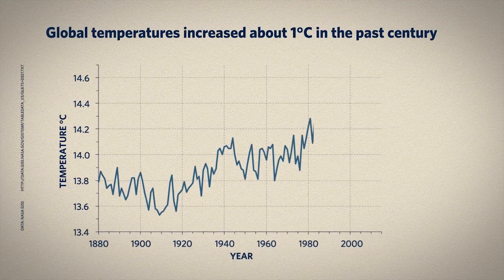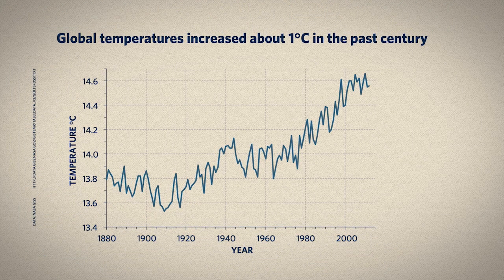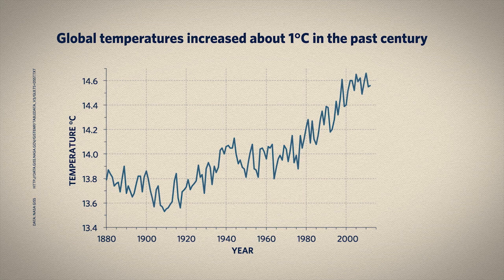Here's the data for global average surface temperatures since 1880. You can see that there's variability from year to year that's normal and expected. For example, 1998 was an unusually warm average year, because there was a large El Niño event, and during El Niños, large parts of the tropical Pacific Ocean are warmer than usual, so the global average temperature is also warmer than usual. But putting aside the year-to-year wiggles, the trend for the past century has been toward warmer temperatures.